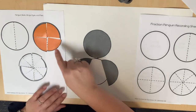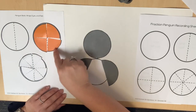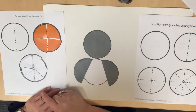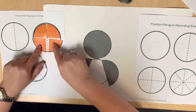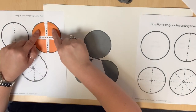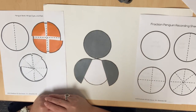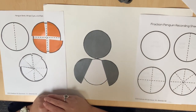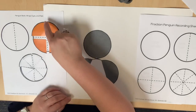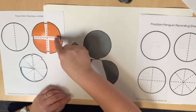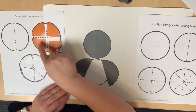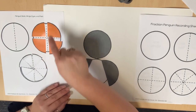Each one half should be glued by the whole body circle to represent wings. Have students cut out the circle that has been partitioned into fourths and color the circle orange. What do you notice about this whole circle? It has lines that are partitioning the circle into four equal parts.